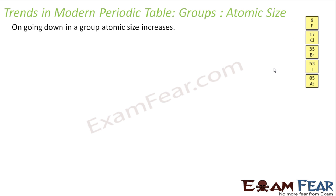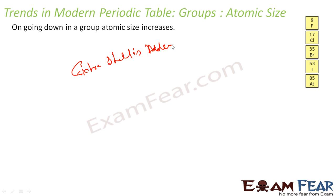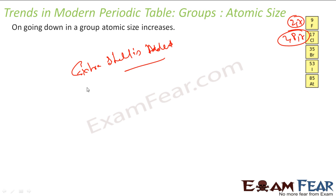If you talk about atomic size, the size increases as you go down. Why? Because an extra shell is added. You may point out that the number of protons is also increasing, but note that the number of shells is also increasing. This element has 2 shells (2, 7), and this one has 3 shells (2, 8, 7). Since the number of shells is increasing, the size is also increasing.